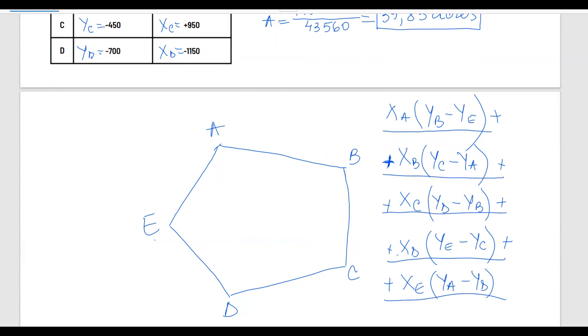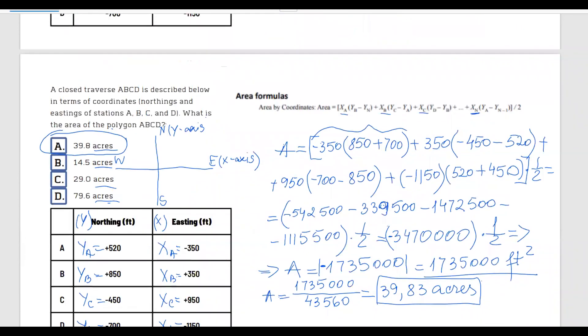I hope you can notice the pattern here. And it doesn't matter how many stations you have. If you are able to draw this shape of yours, if you have a hexagon, it doesn't matter, and you're able to understand how the formula is actually applied, it's going to be easy for you to calculate the area of your polygon. So in this case, correct answer is 39.8 acres. The correct answer is A.